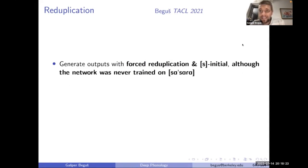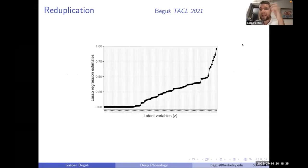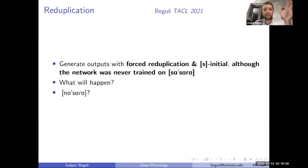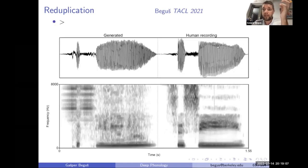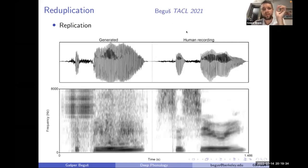The reduplication extends to novel, unobserved data. 'S' was never reduplicated in the training data, but by forcing reduplication via the code and forcing 's' in the output by setting the corresponding latent variables, the network should produce an S-initially reduplicated form it never saw before. If it didn't learn the identity-based pattern, it would produce something like 'nasara', just concatenating. But if it learned the pattern, it produces 'sasara' — and this is actually what the network does.